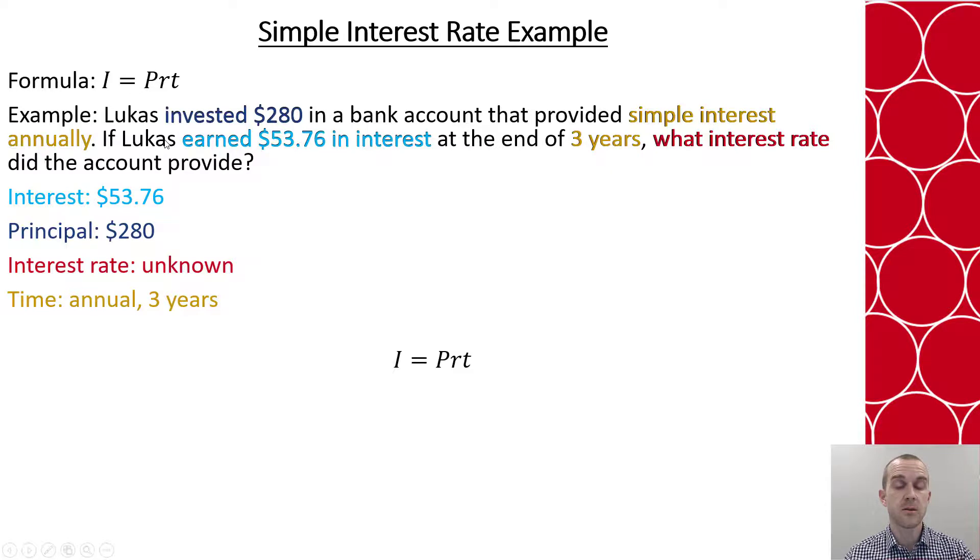So using our formula, we have $53.76 equals $280 times r times 3. I'm going to simplify my right hand side by multiplying the values together, and that's going to give me 840r.